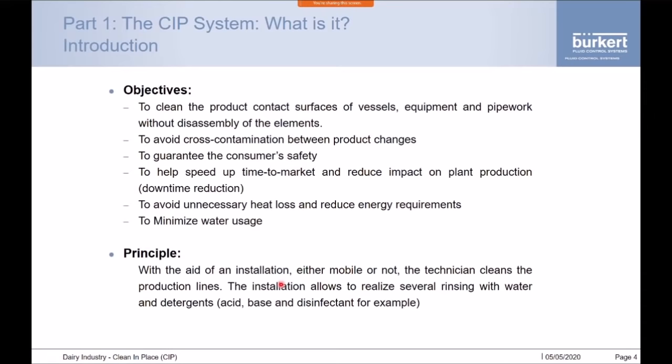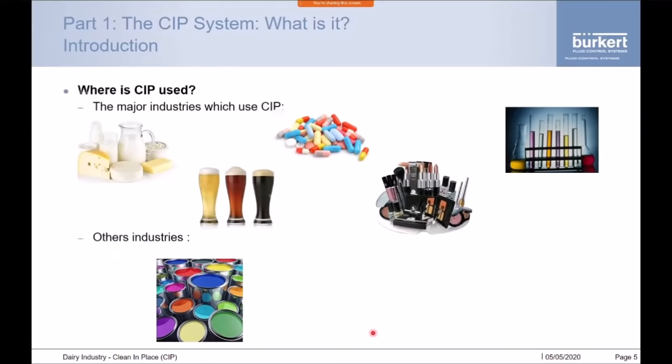The principle is that with the aid of an installation — now that can be fixed or mobile — the technician cleans the product lines in any pipes or vessels that are attached, using several different stages along with rinsings. The stages typically use an acid or a base and a disinfectant, interspersed with several rinsing cycles to make sure lines are nice and clean. Industries that use CIP include dairy, brewery, pharmaceutical, and cosmetics.